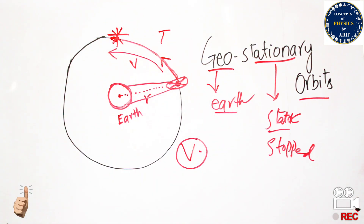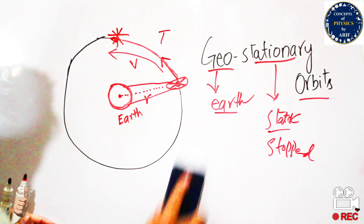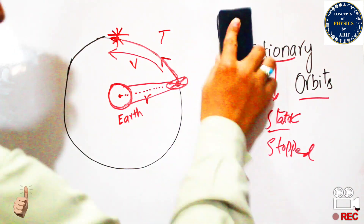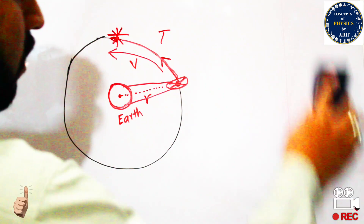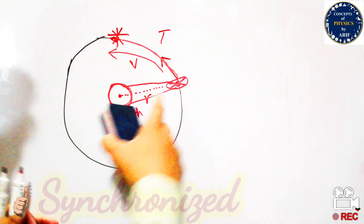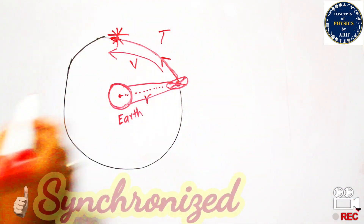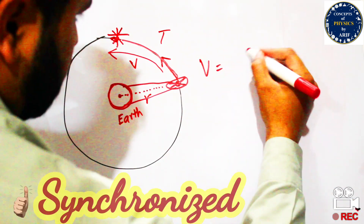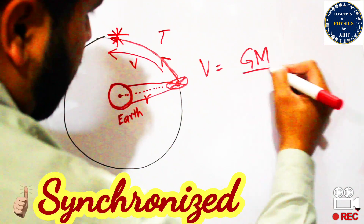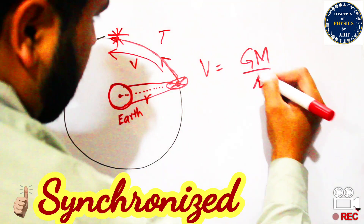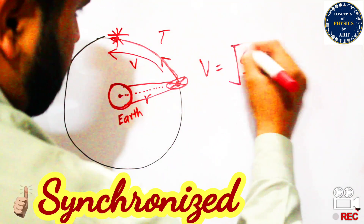We will demonstrate this description using some formulas. We know that the orbital velocity of a satellite is given by the formula V equals the square root of GM over R.